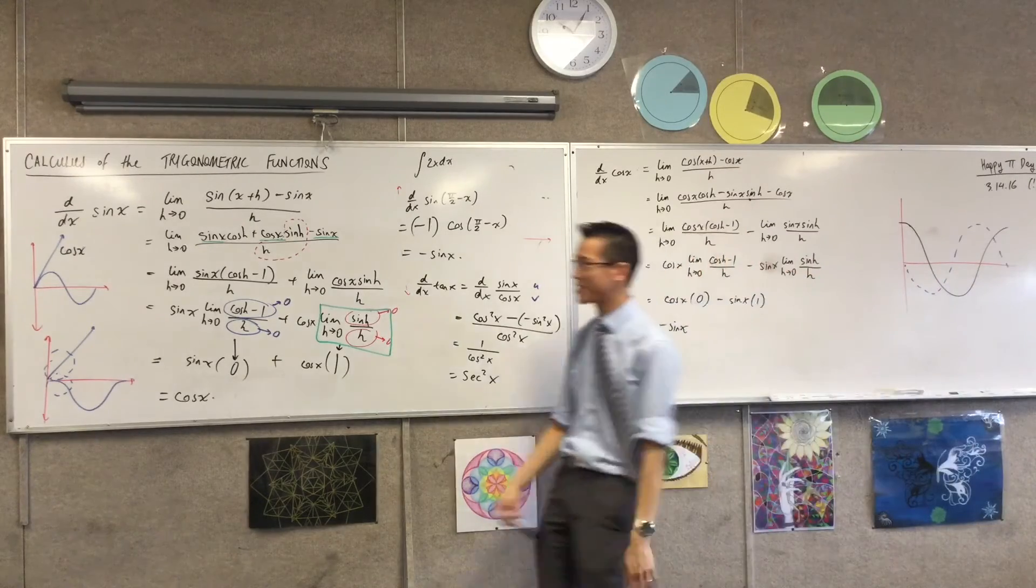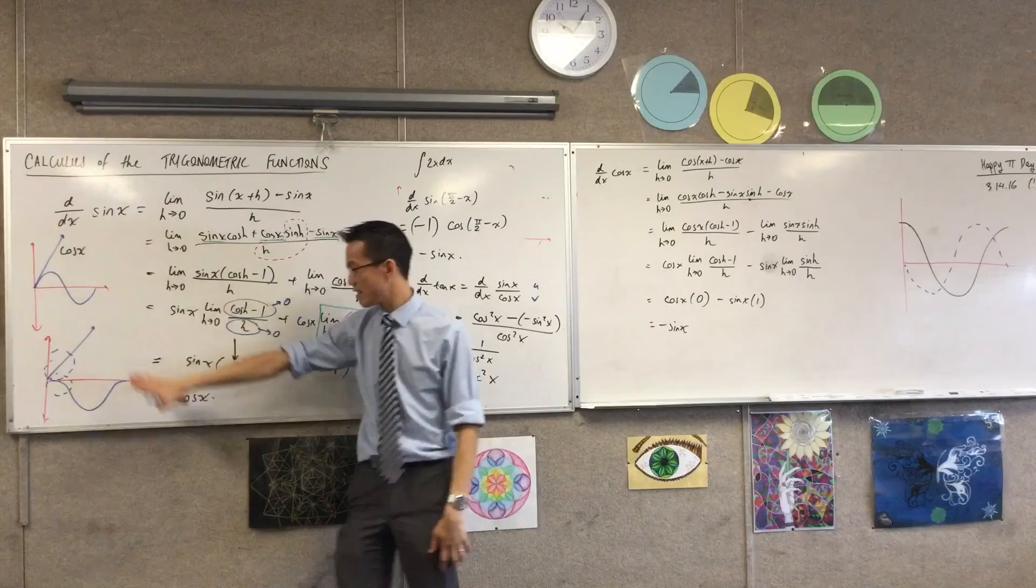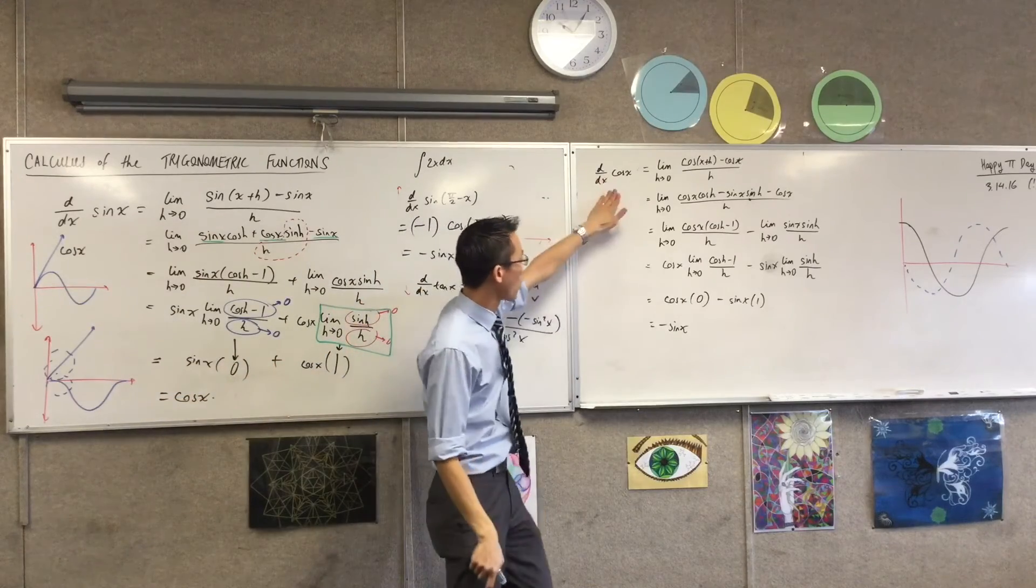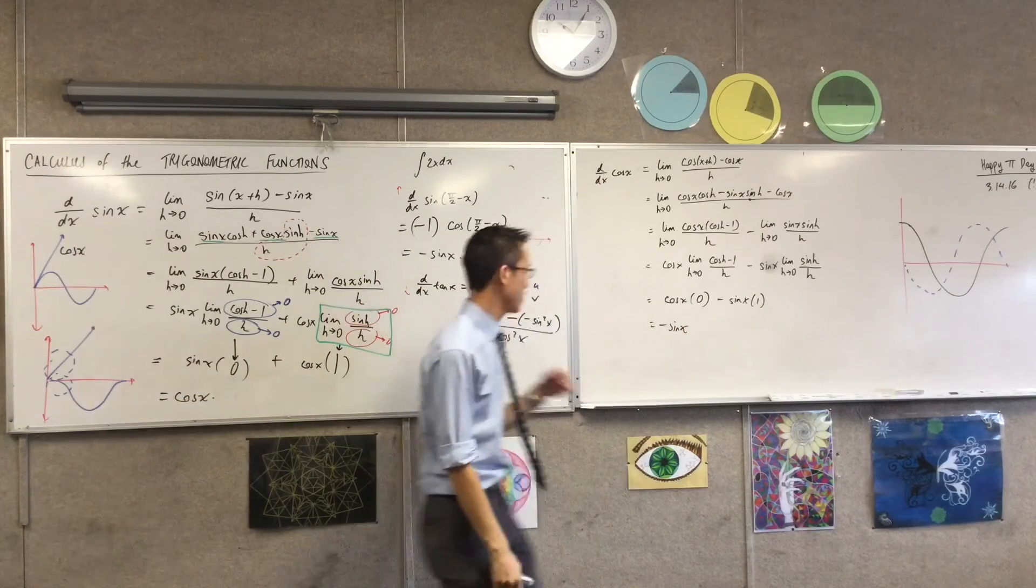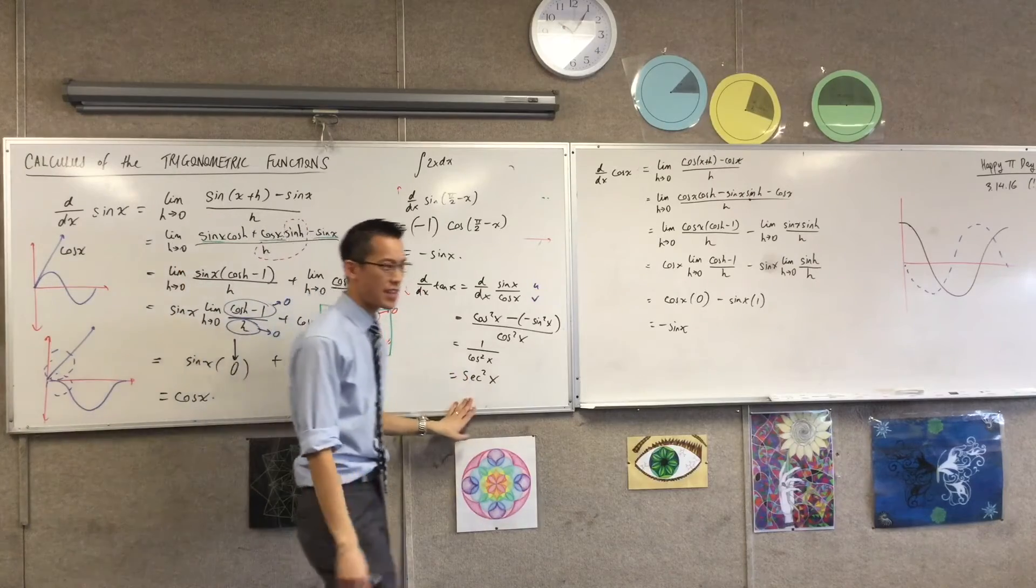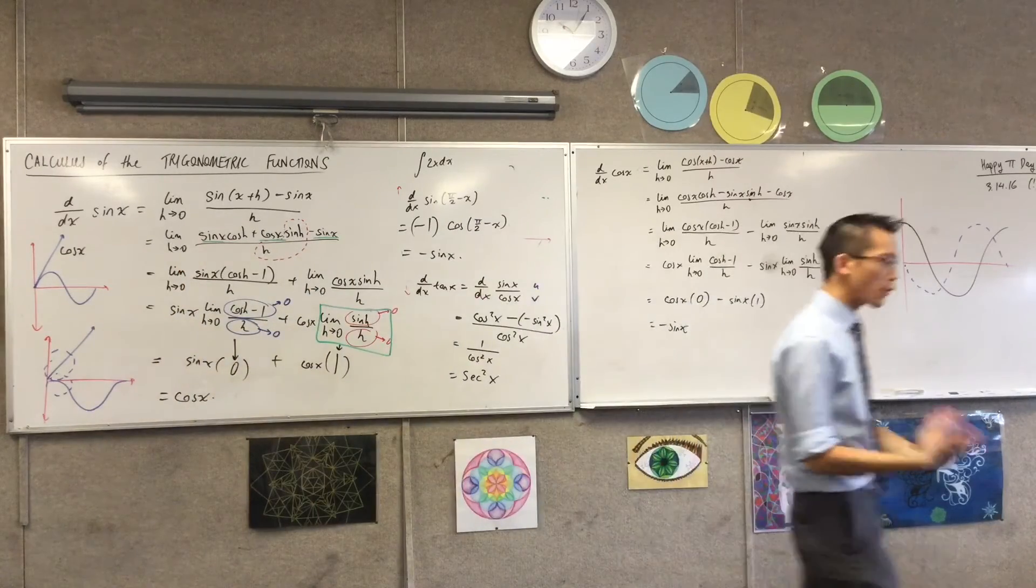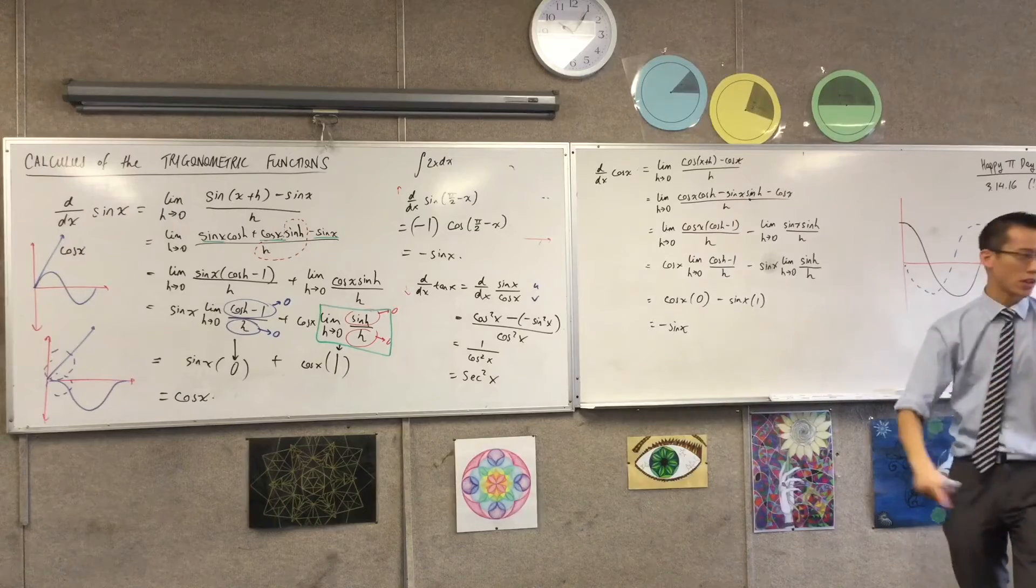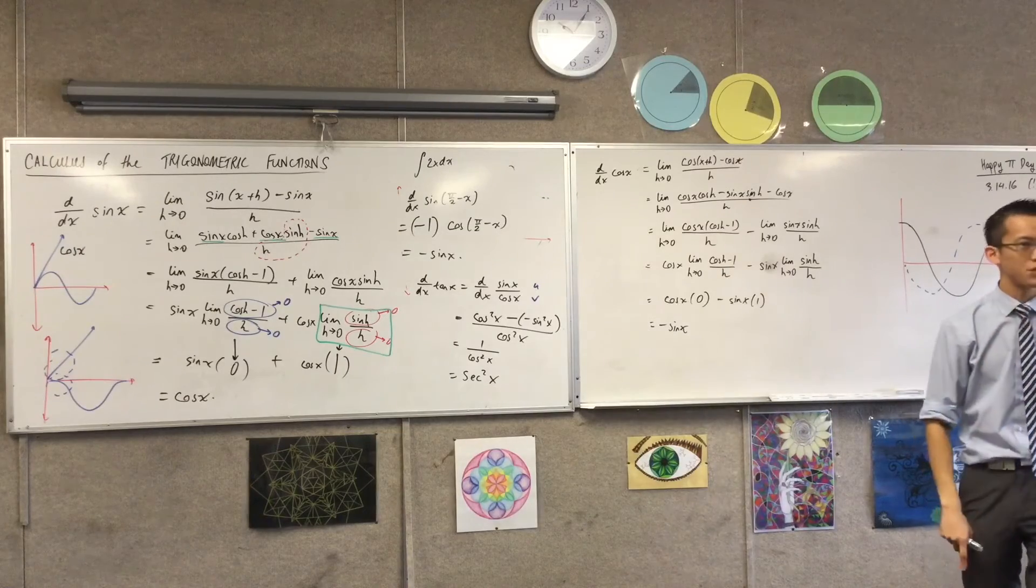So put a big box around. The derivative of sine is cosine. The derivative of cosine is negative sine. And the derivative of tan is sec squared. And then of course you can combine these with all of the product rule, quotient rule, chain rule questions you already know.